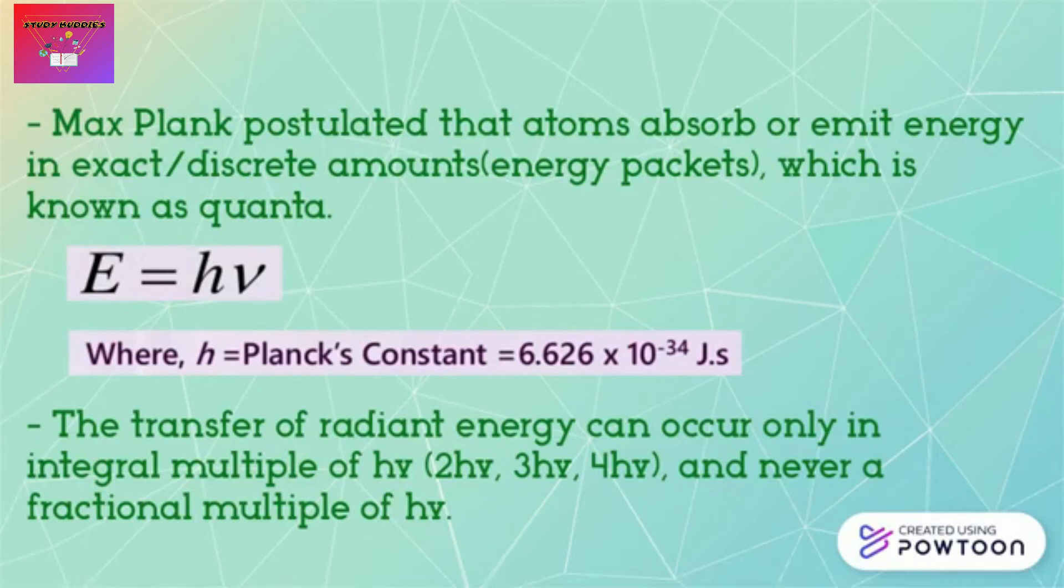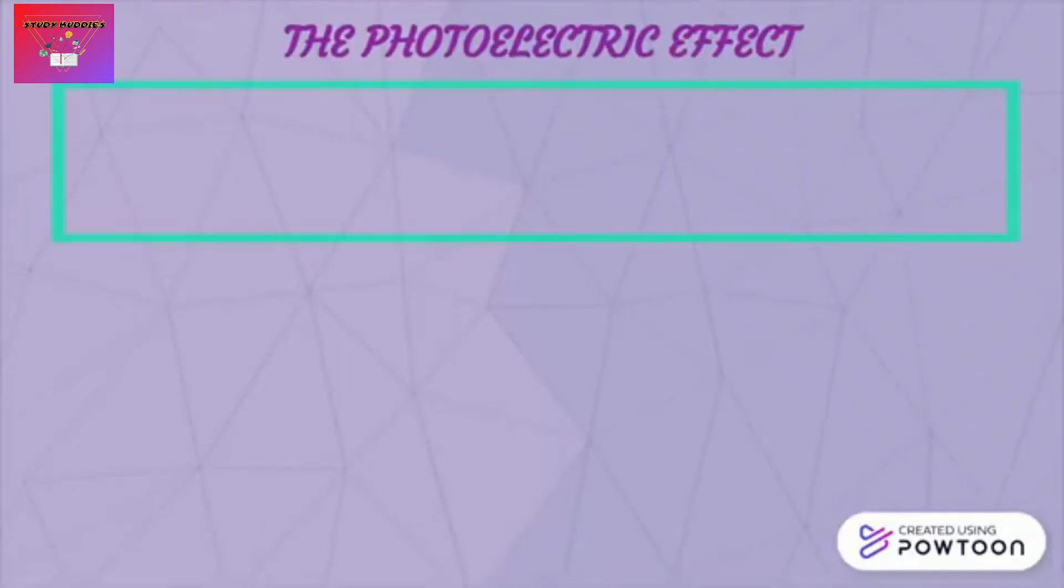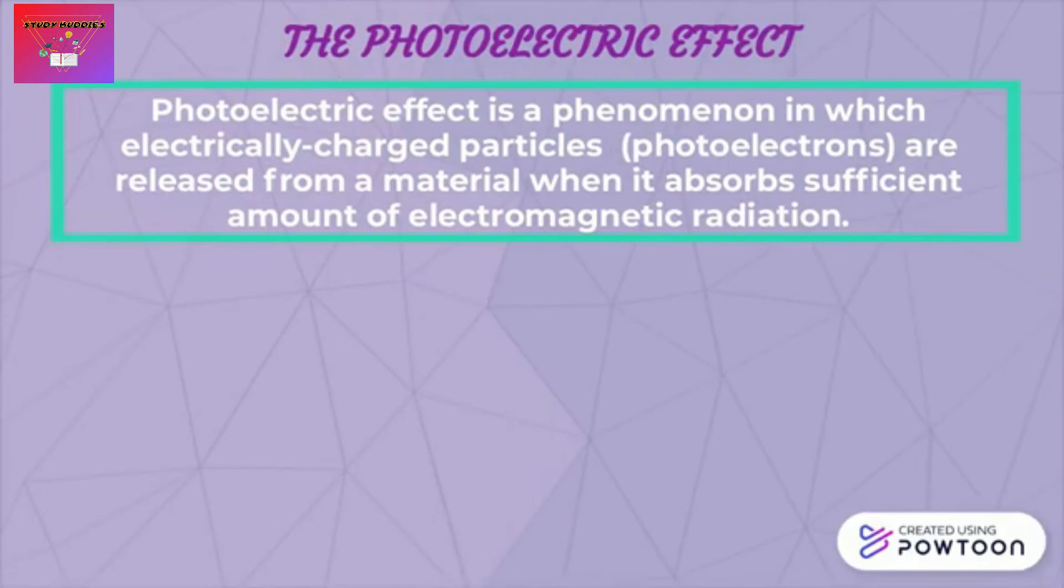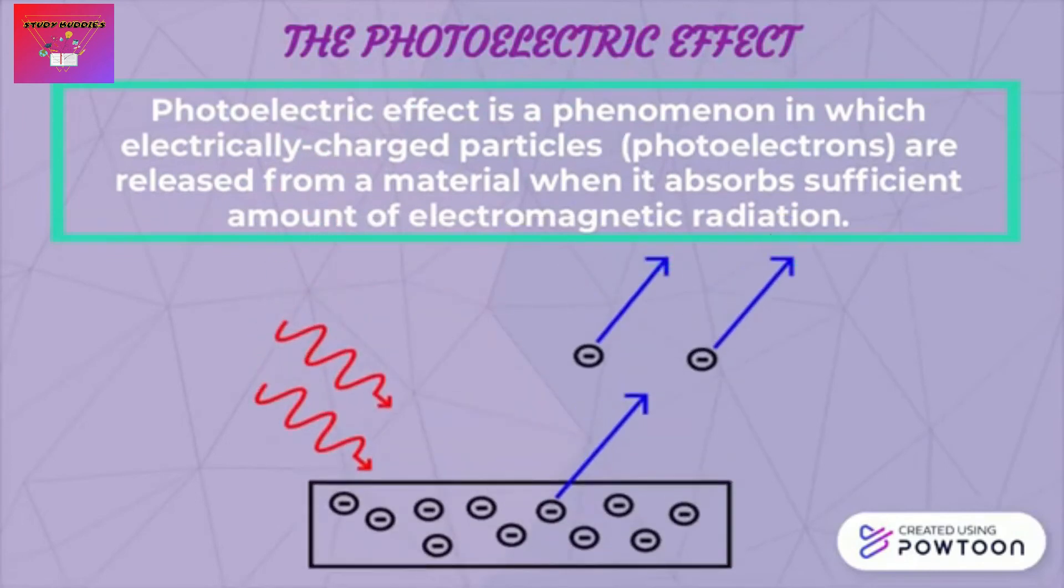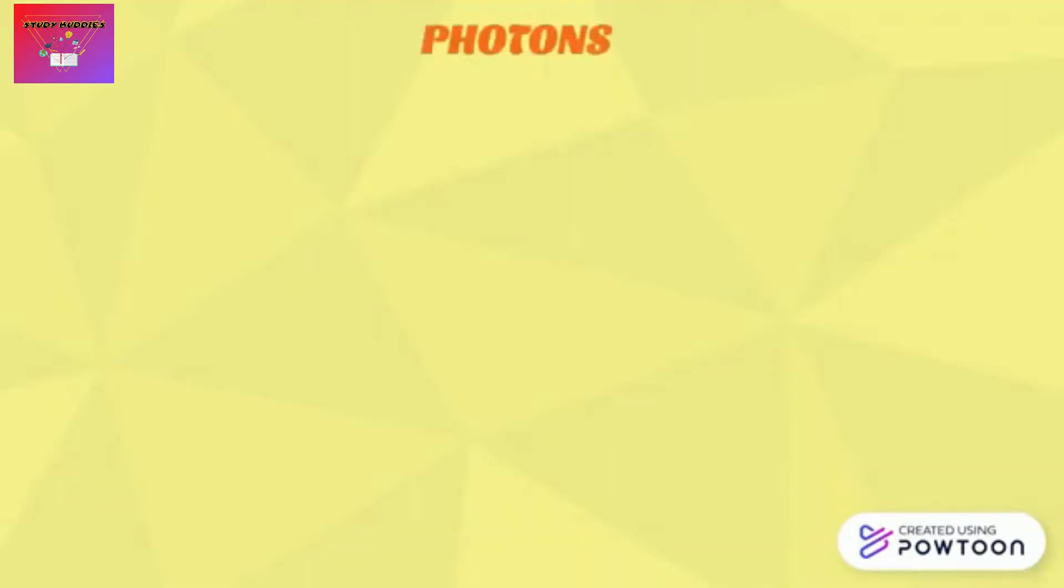Now let's proceed to the second part, the photoelectric effect. Photoelectric effect is a phenomenon in which electrically charged particles, also known as photoelectrons, are released from a material when it absorbs sufficient amount of electromagnetic radiation. The diagram below shows a photoelectric effect. This effect is often defined as the ejection of electrons from a metal plate when light falls on it.